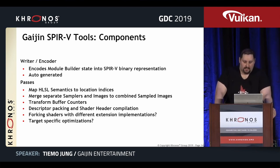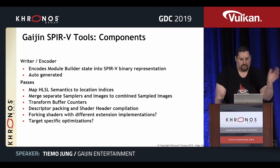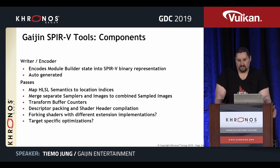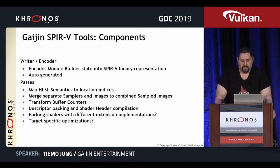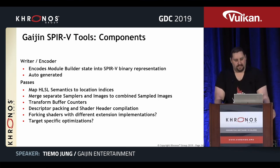There are ideas around flagging shaders with different extensions or target-specific optimizations, like tagging variables with low precision to improve shader performance. And with that, thank you Timo.